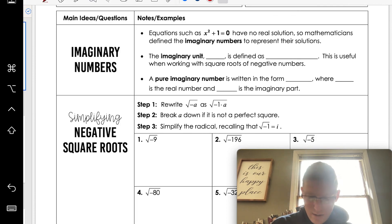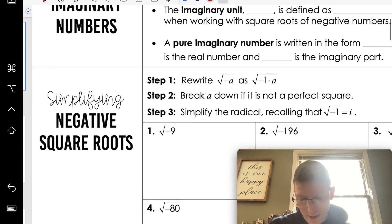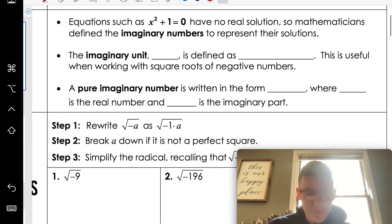So mathematicians got together, and we came up with, they, I wasn't a part of this, this idea of imaginary numbers to help deal with negative signs under a square root. So we came up with the imaginary unit i. I know, we're really creative. And it's simply defined as i equals the square root of negative one. That's all it is. So this is useful when working with square roots in negative numbers. So then we've got one more definition, a pure imaginary number is written in the form bi, where b is the real number, and i is the imaginary part. So long story short, b would be a number, and that's all it is.